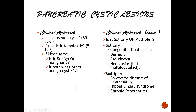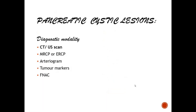The approach to a cystic lesion: first question — is it a pseudocyst? If not, it is a true cyst, which may be neoplastic — then is it benign or malignant? Third, is it solitary or multiple? Solitary cysts include dermoid, duplication, pseudo, and neoplasia; multiple cysts suggest polycystic disease of kidney, liver, and pancreas, von Hippel-Lindau syndrome, or chronic pancreatitis. The same imaging modalities used for pancreatic cancer — CT, MRI, EUS, arteriogram, tumor markers, FNAC — apply to cystic lesions.